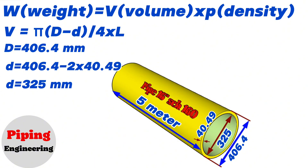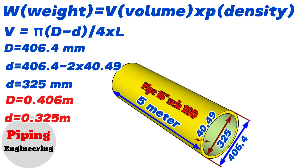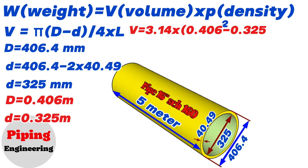These dimensions should be converted to meters as well. So the outside diameter of the 16 inch pipe is 0.406 meters and the inside diameter is 0.325 meters. We also know that the length of the pipe is 5 meters. Now let's write this into the volume calculation formula. The volume of the 16 inch pipe equals 3.14 multiplied by (0.406 squared minus 0.325 squared) divided by 4, multiplied by 5 meters.